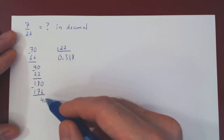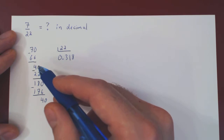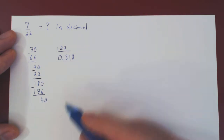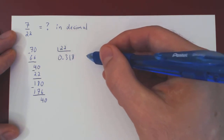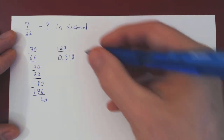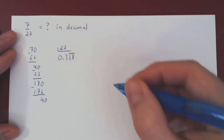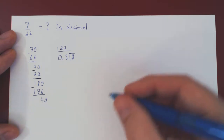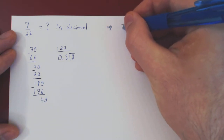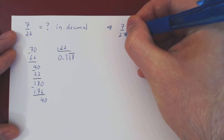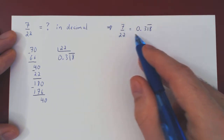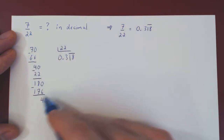Looping forever between 40 and 180 means that we will forever have 1, 8, 1, 8, 1, 8, and so forth. So the decimal expansion of 7 over 22 is 0.318 periodic. This was really easily obtained with a simple long division.